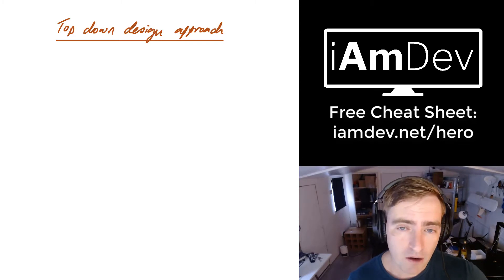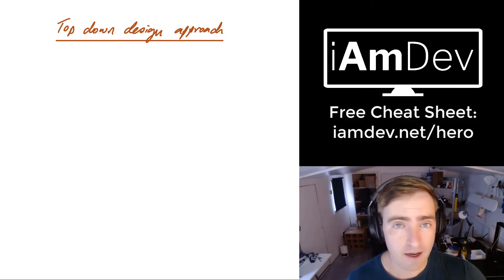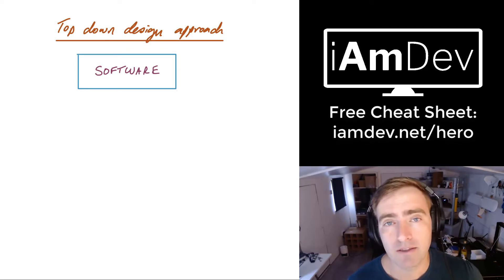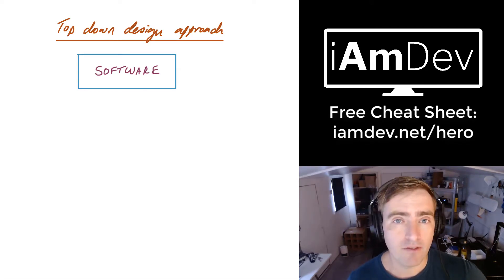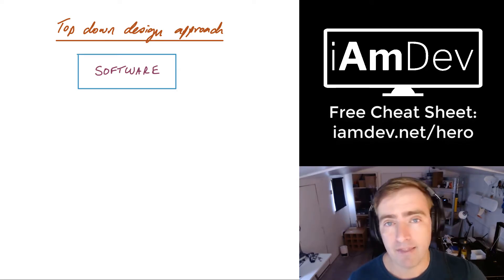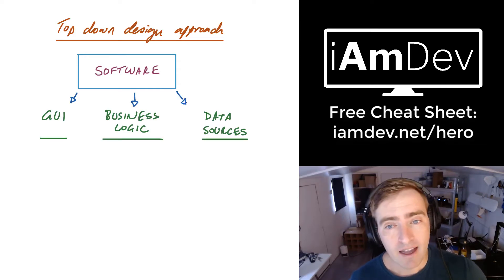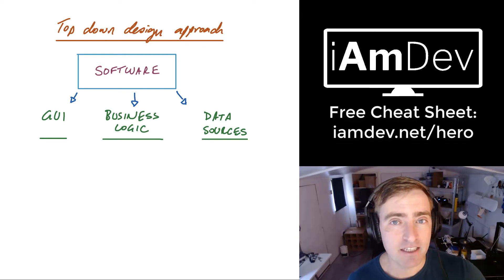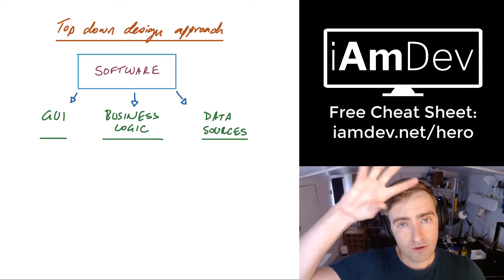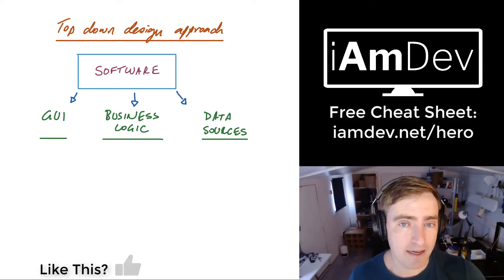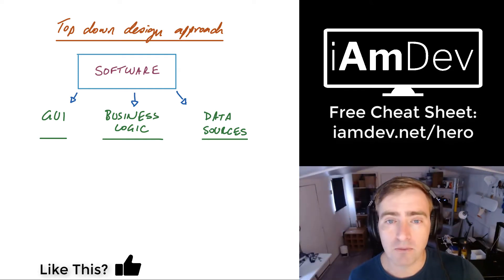We start at the top, and at the top we have software, app, whatever it is — we have a complete product. Once we step down another level we can split that product into things like the graphical user interface, the business logic which transforms data, and the data sources which is where the data comes from. So you get the data, you transform it, and then you display it. That's basic software in all of its forms really.